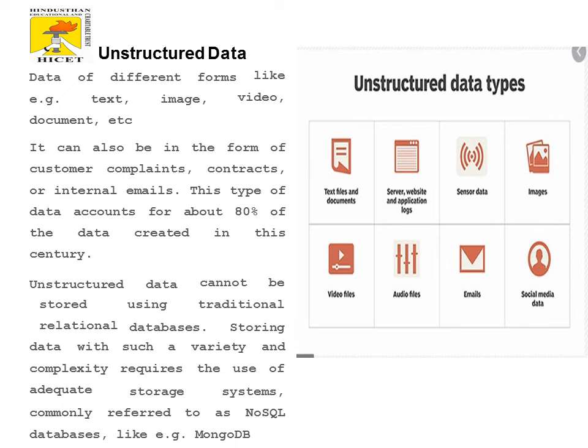Unstructured data comes in different formats like text, image, audio, video, etc. It may be a document file or a log file, and may contain customer complaints, contracts or internet email. This type of data constitutes above 80% of the data created today. Unstructured data cannot be stored in normal traditional relational databases since it contains a high variety of data.